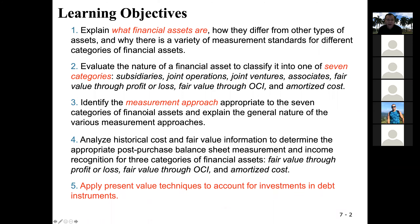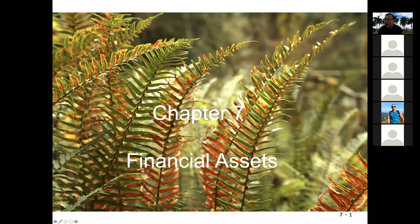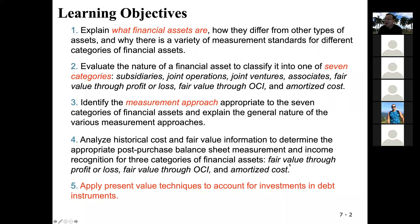We want to know how to concern about the valuation on the balance sheet — so we're going to measure it. What are the measurement approaches that are appropriate for each category? Our focus in this chapter is three categories: fair value through profit or loss, fair value through OCI (other comprehensive income), and amortized cost. The other four categories you are going to learn in the advanced financial accounting course.